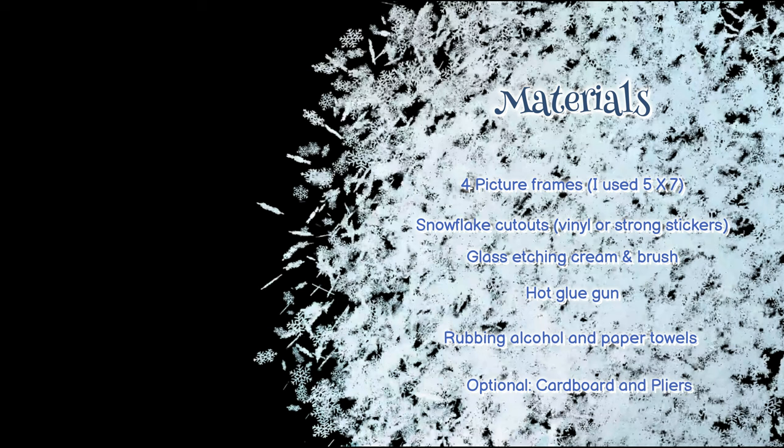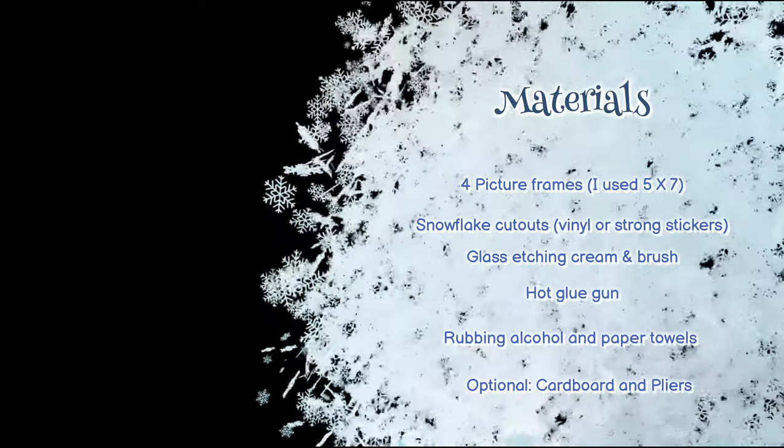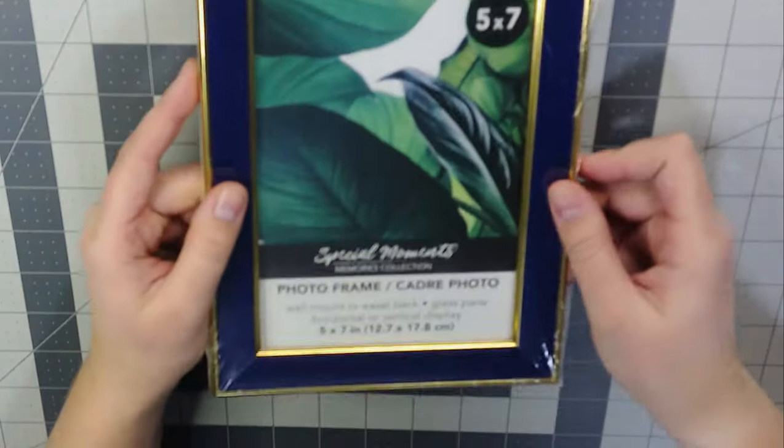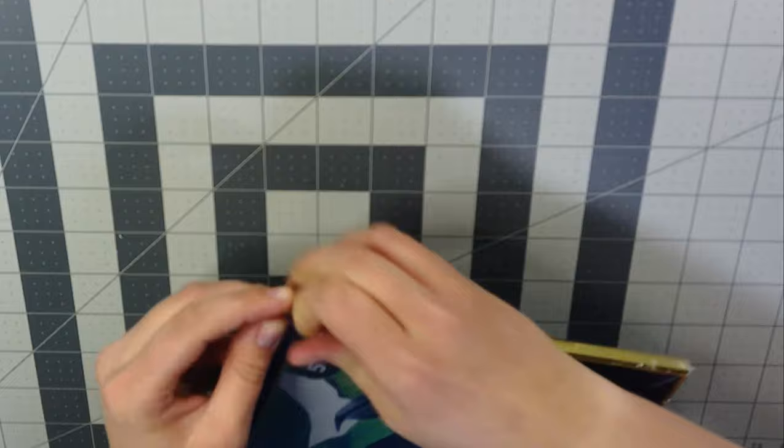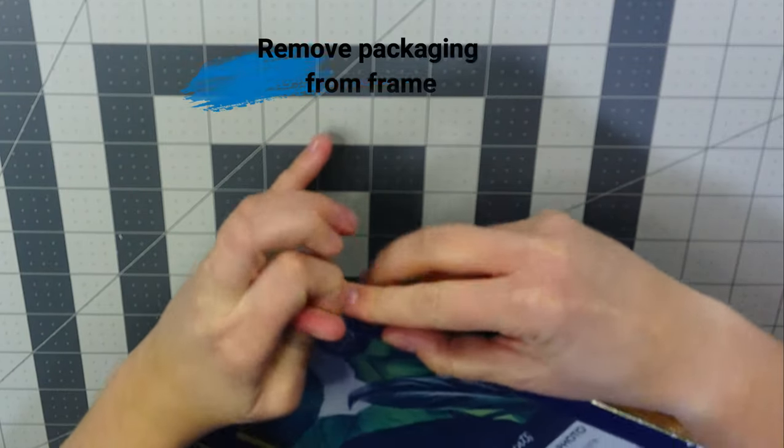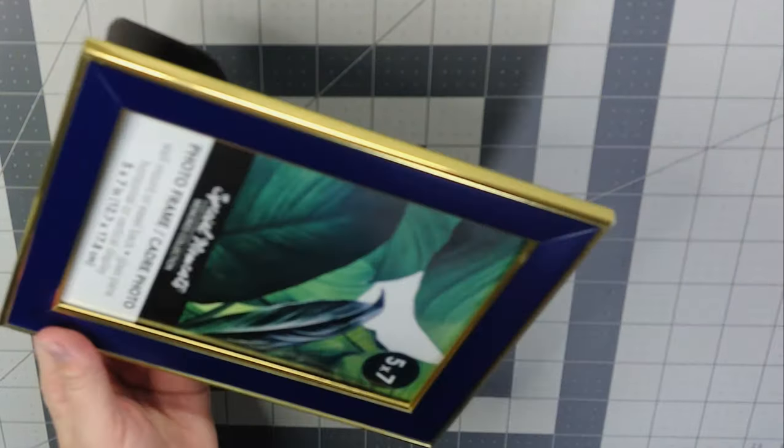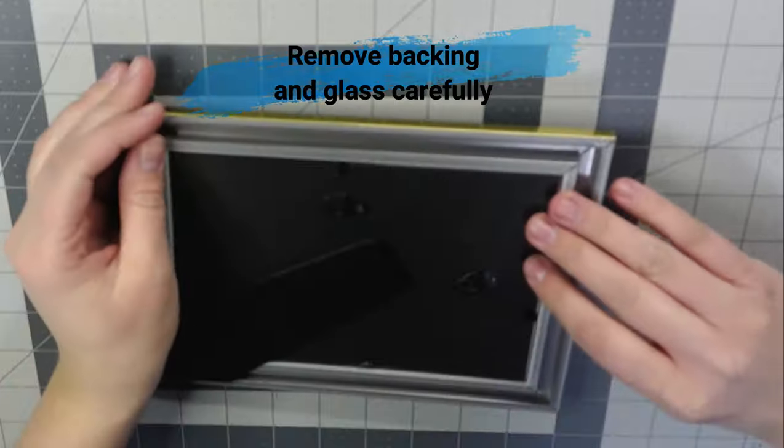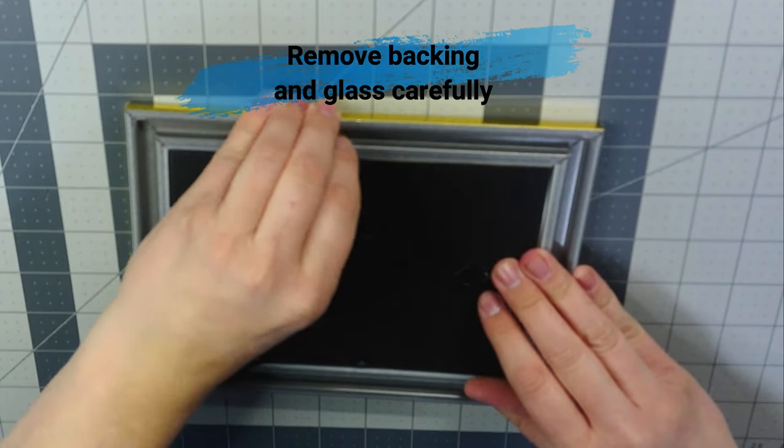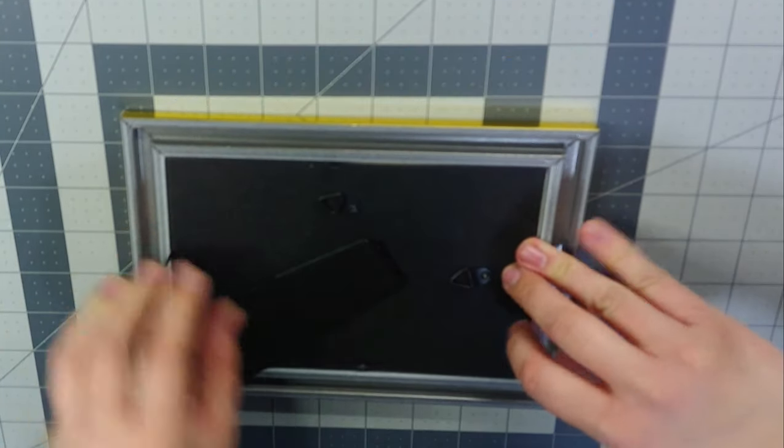A hot glue gun, rubbing alcohol and paper towels, and optional is some cardboard and pliers. These are the 5x7 frames that I purchased at the Dollar Tree. First you want to remove the packaging from the frame, then remove the backing and be very careful as you remove the glass.